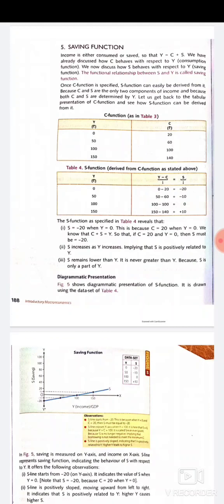When income is 100 and consumption is also 100, the person is spending all his income, so saving is 0. But when income increases to 150 and consumption expenditure is 140, the person is now saving some part of his income — saving is 10. So the table shows that when income is 0, there is negative saving because the consumer consumes for survival. Saving increases as income increases, showing a positive relationship. Saving always remains lower than income because saving is only a part of income.